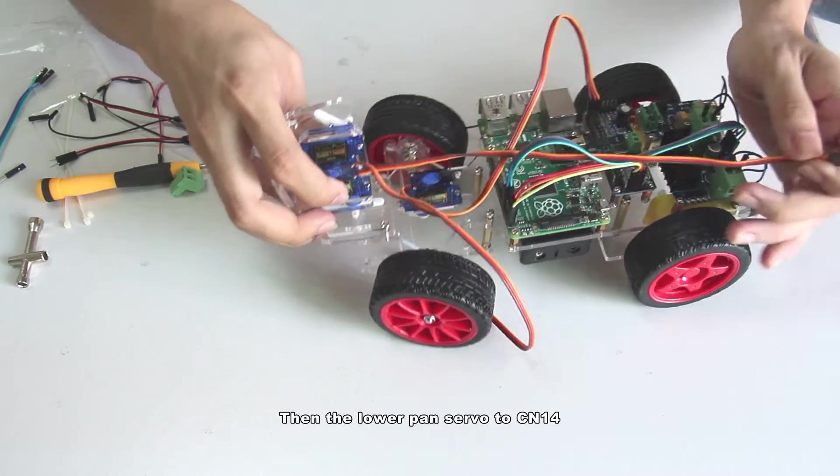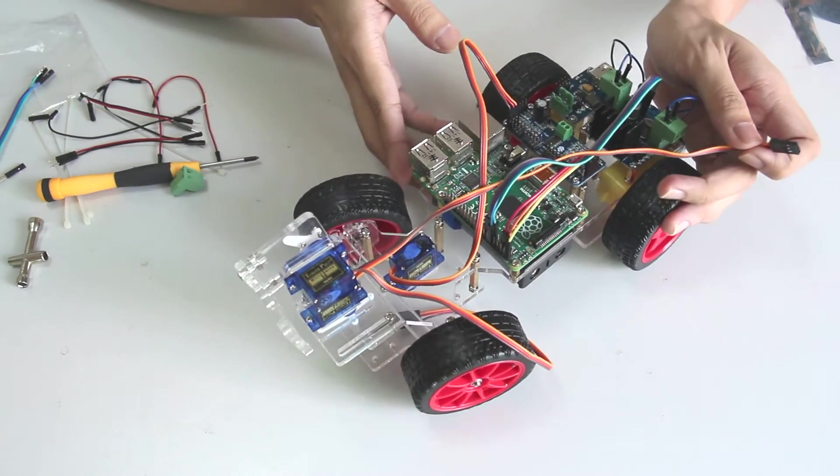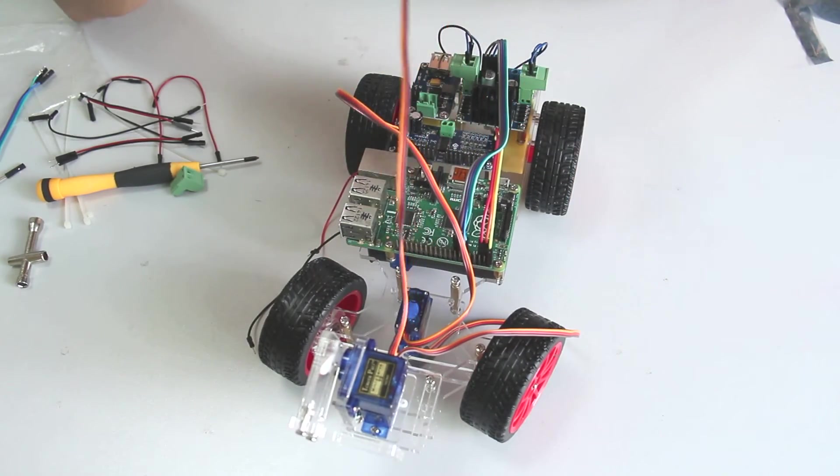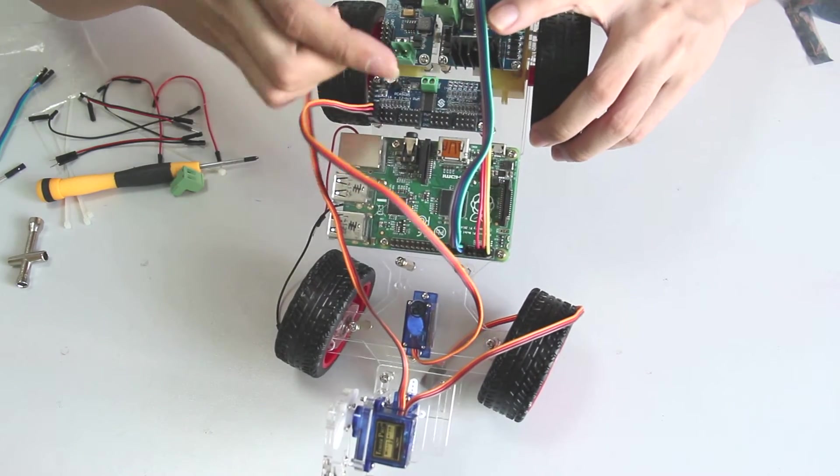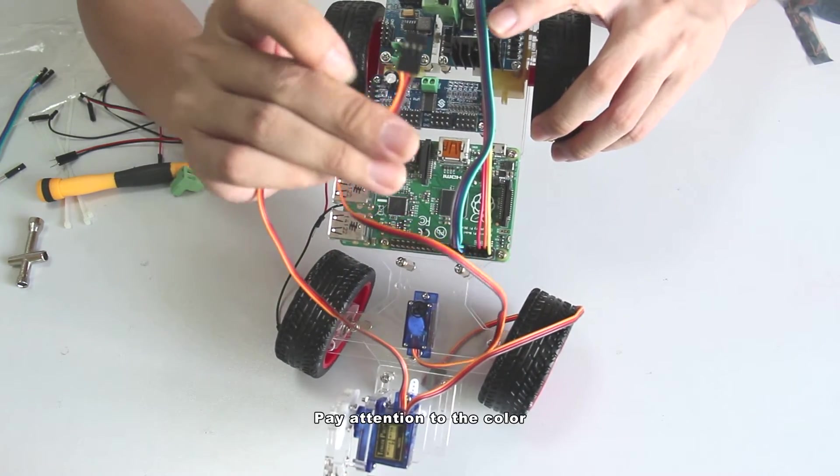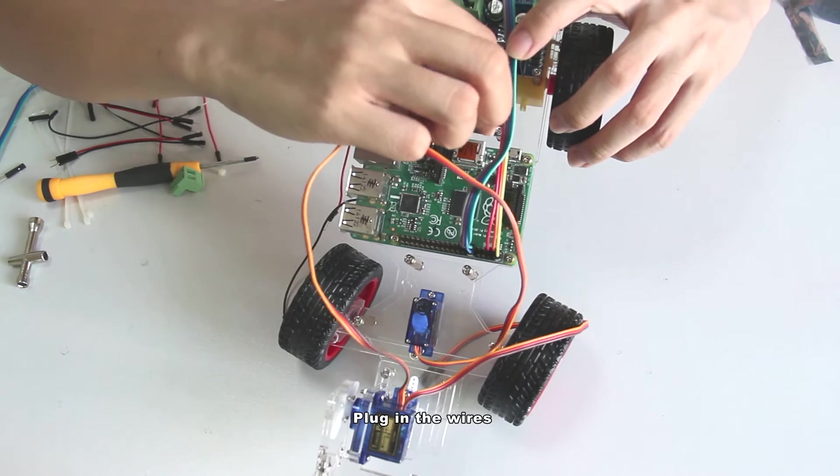Then the lower pan servo to channel 14. Pay attention to the color. Plug in the wires.